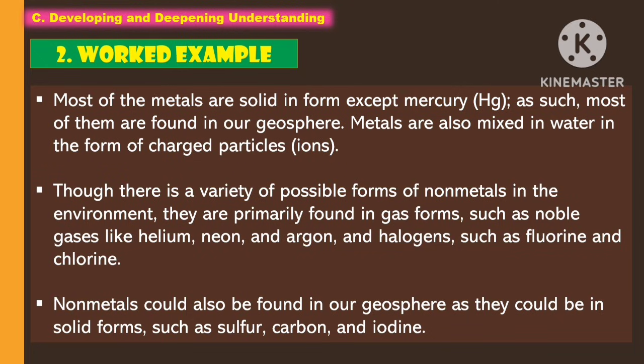There is a variety of possible forms of non-metals in the environment. They are primarily found in gas forms, such as noble gases like helium, neon, and argon, and halogens such as fluorine and chlorine. Non-metals could also be found in the geosphere, as they can be in solid forms such as sulfur, carbon, and iodine.